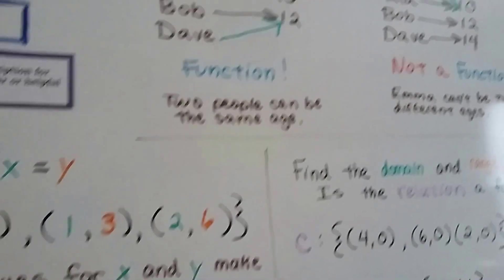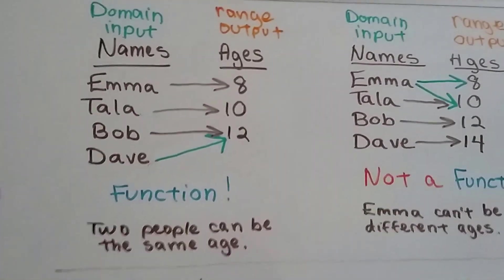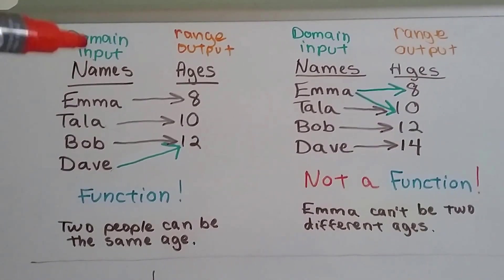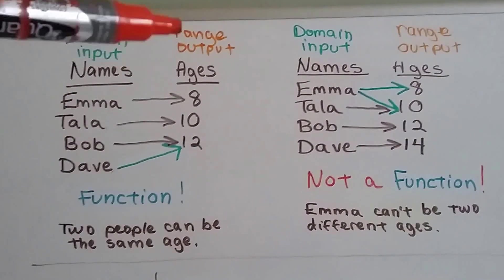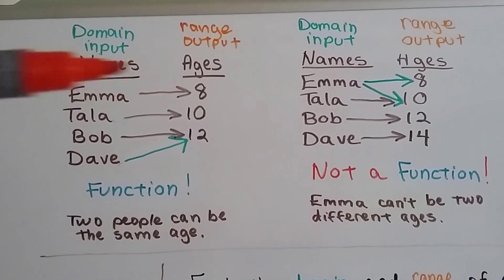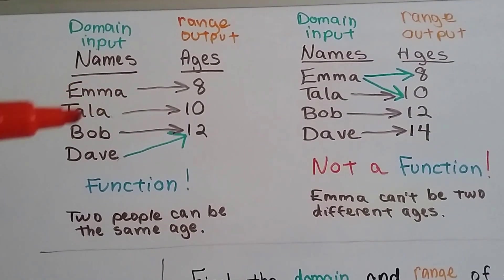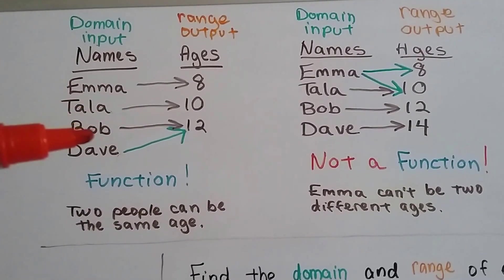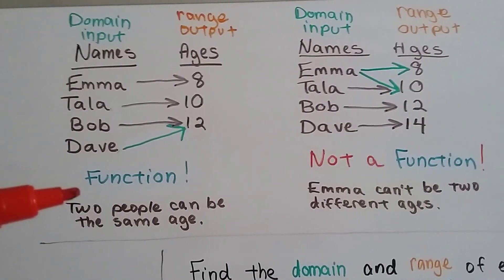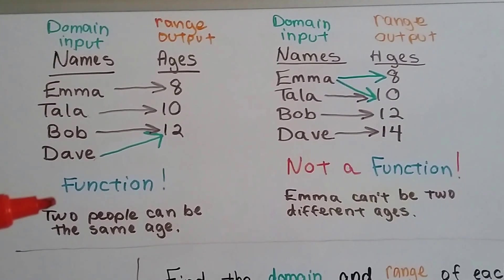So take a look at this up here. We've got domain inputs here as names and range outputs here as ages. So if Emma is 8 years old, Tala is 10 years old, Bob is 12 years old, and Dave is 12 years old. So that's a function because two people can be the same age. Many people can be the same age.